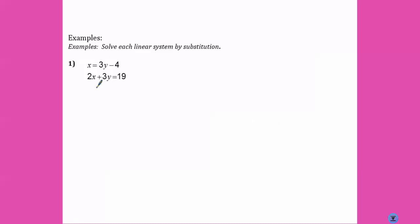So, in number one, we don't need to isolate one variable in one equation because we already have one here. X is already by itself. So we're going to take what X is equal to and substitute it in for the X. So our new equation would be 2 times 3Y minus 4 plus 3Y, because that was right here, equals 19.